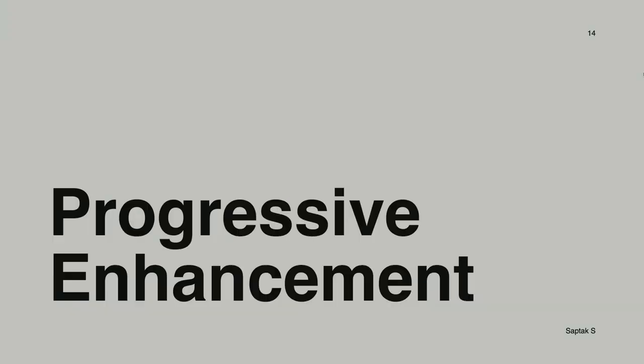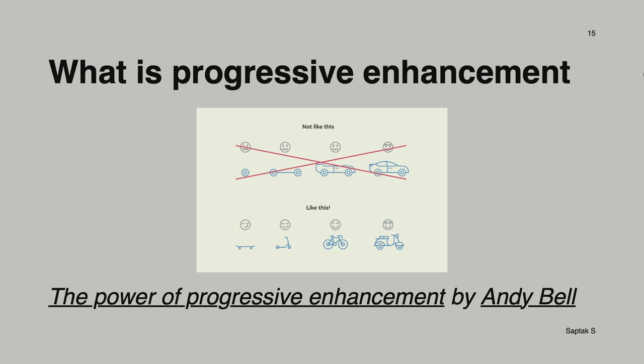With that, let's get started with different ideologies we can follow to make your website more privacy and accessibility-centric. First: progressive enhancement. This is a really, really important approach. The concept comes from a blog called "The Power of Progressive Enhancement" by Andy Bell, and it illustrates the idea with two different pictures — great analogies of whether something is progressively enhanced or not.